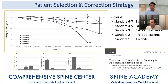I'll explain this through a paper we have published on VBT and what happens to spontaneous curve behavior after implementation. In this study, we grouped patients into five main categories according to where they are in their growth curve: Sanders 1 — very early, juvenile; Sanders 2 — pre-adolescent; Sanders 3 — early adolescent; and then late adolescent and early mature.